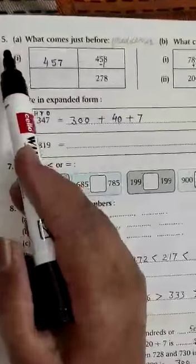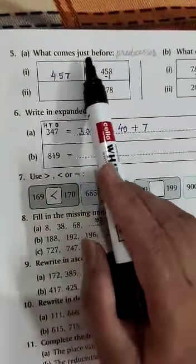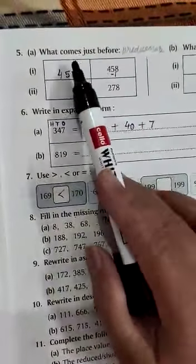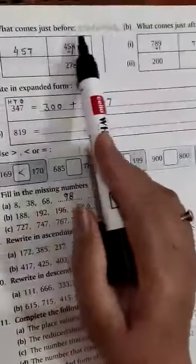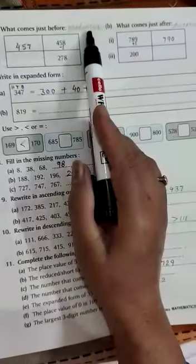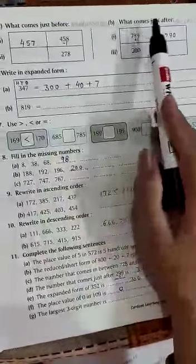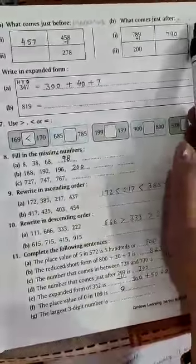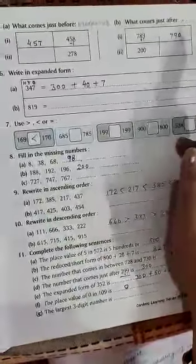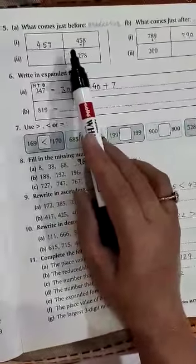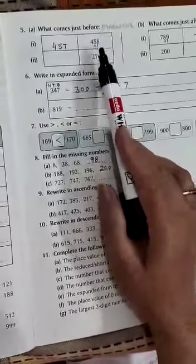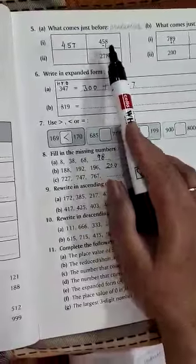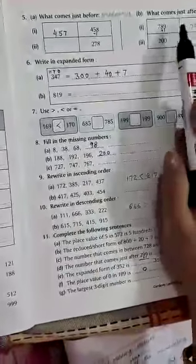Question 5: What comes just before? What comes just before and what comes just after? What comes just before is predecessor, one number before. And what comes just after is successor, one number after. In my previous video, I have told you that to find the predecessor we will subtract 1.